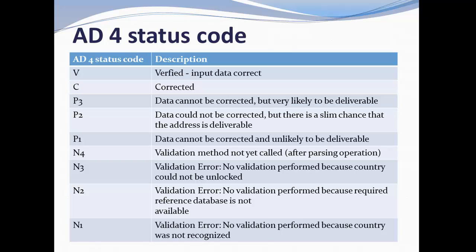Then we have P3, P2, P1. If the data cannot be corrected but mail can still be delivered — meaning the given input data cannot be corrected by Address Doctor but the mail can be delivered to that address on that day — such addresses are marked P3. Some addresses are not updated in the system, but an experienced post office employee can find the address and deliver the mail. P2 means data cannot be corrected but there are still some chances to deliver the mail.